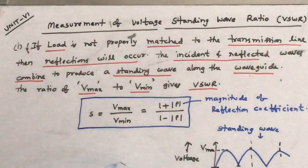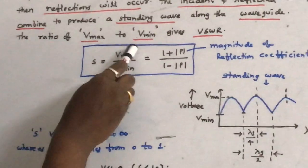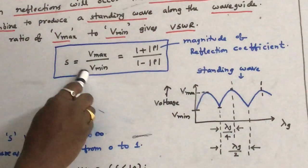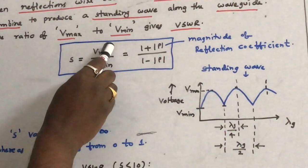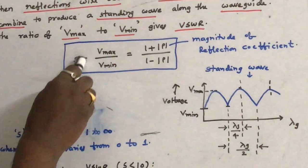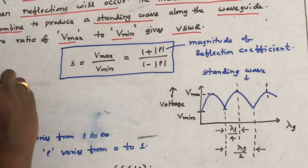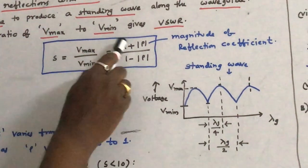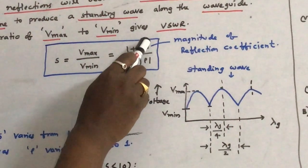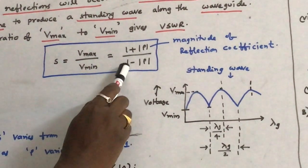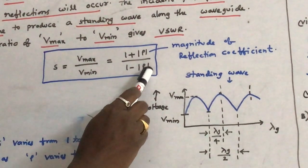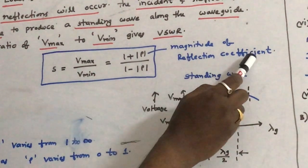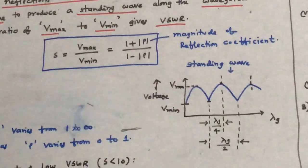The formula of VSWR is very simple: maximum voltage on the standing wave to the minimum voltage on the standing wave — this gives the voltage standing wave ratio. In terms of reflection coefficient, VSWR equals (1 + |Γ|) / (1 − |Γ|), where |Γ| is the magnitude of the reflection coefficient.